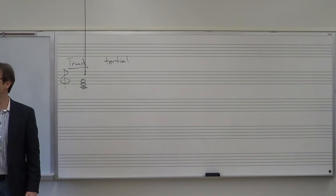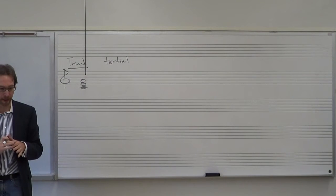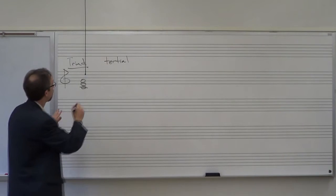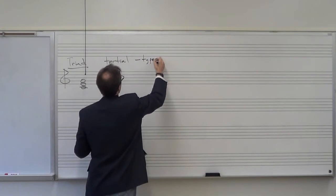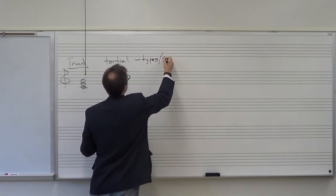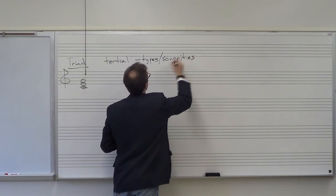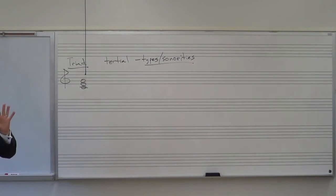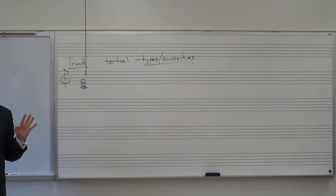There are other types of tertial harmony other than triads. With these triads, they have different types — another word for that is sonorities. We have four common types, four common sonorities, and each one has a different kind of formula.